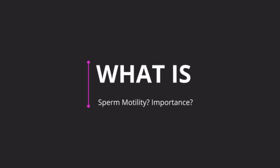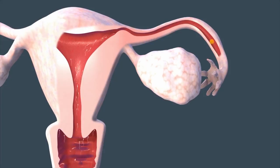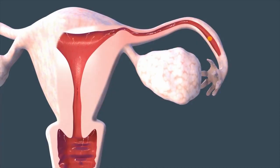So what is sperm motility and why is it important? Sperm motility is the ability of sperm to move efficiently. This is important for fertility because sperm need to move through the woman's reproductive tract in order to reach and fertilize the egg. If sperms do not have good motility, it will be difficult for them to reach the egg in the fallopian tube and therefore be unable to successfully achieve fertilization.